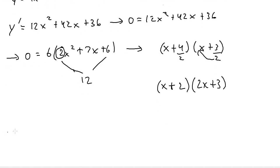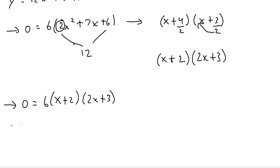So now when I rewrite my derivative, I can say 0 equals 6 times, or two factors, of x plus 2 times 2x plus 3. So now all I have to do is find the zeros. So I'll set x plus 2 equal to 0 and 2x plus 3 equal to 0. When x plus 2 equals 0 and I subtract the 2, x will equal negative 2. And when 2x plus 3 equals 0, then x will be equal to negative 3 halves, or negative 1.5.